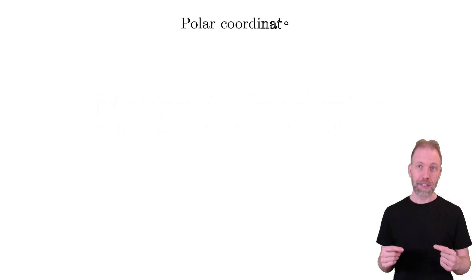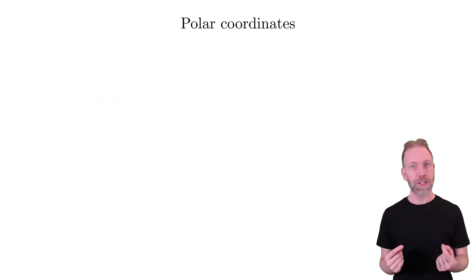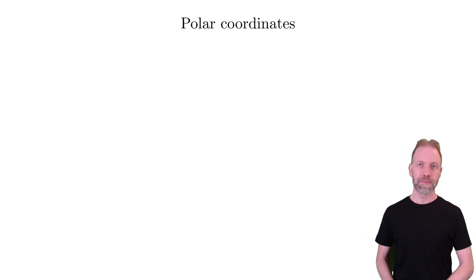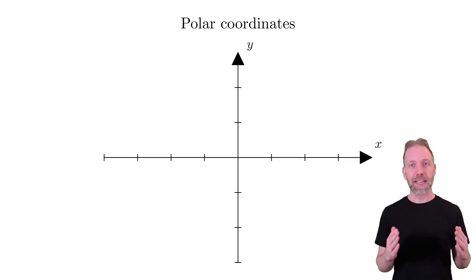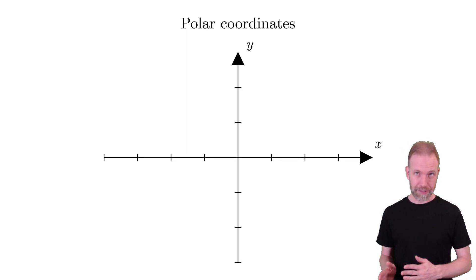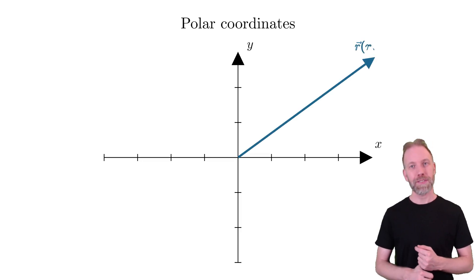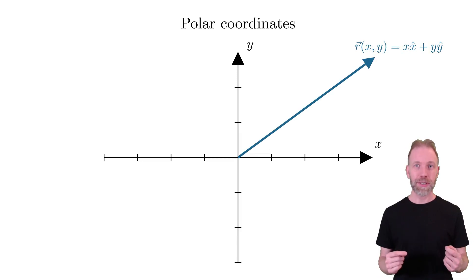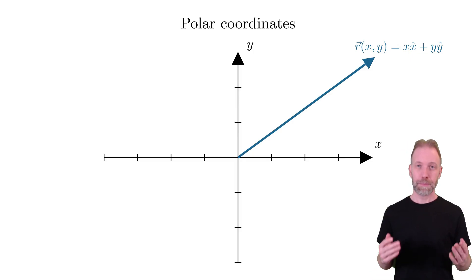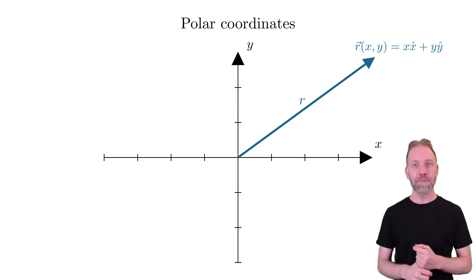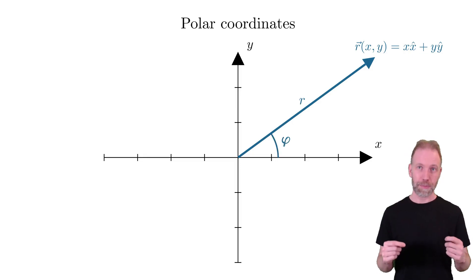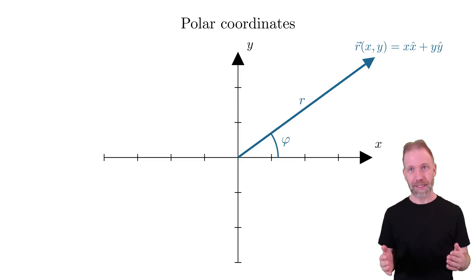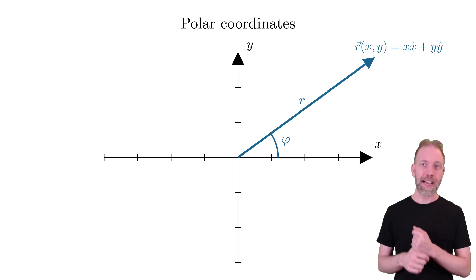To begin, we'll talk about polar coordinates, which is the two-dimensional version of cylindrical coordinates. Let us start with how we can convert between Cartesian and polar coordinates. We define the position vector, which in Cartesian coordinates is given by the x and y coordinates. In polar coordinates, we instead use the length r and the angle phi to define the position. You may see different names for these; what is important is that it is one length and one angle.